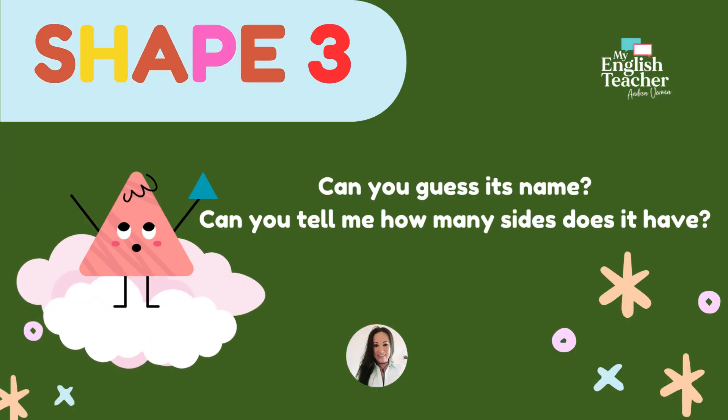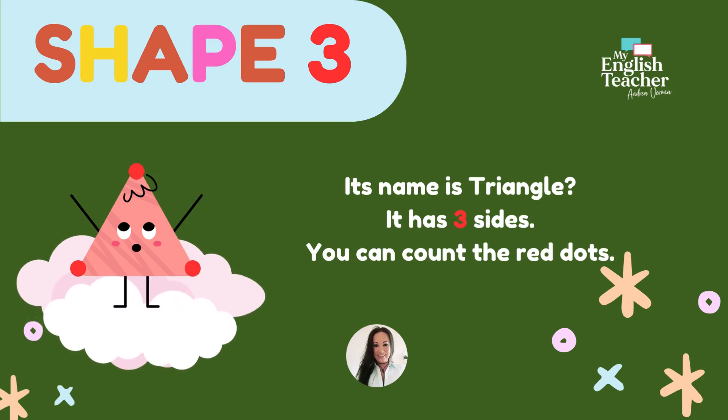Can you guess his name? Can you tell me how many sides does he have? Don't worry, take your time. Let's find out. His name is Triangle. It has 3 sides. You can count the red dots.